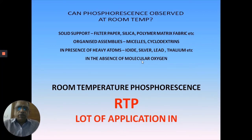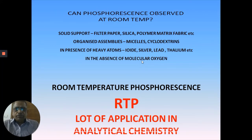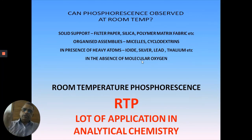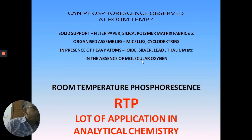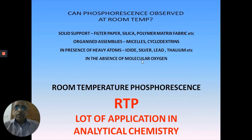Room temperature phosphorescence (RTP) is an interesting phenomenon in terms of analytical application - it is now popular in luminescent measurements. It has a lot of application in analytical chemistry. Analysis of coal tar, petroleum products, polymer inhibitors, and pharmaceutical drugs - drug industries use RTP extensively to identify products, even combining it with liquid chromatography for detection.